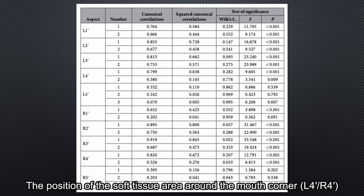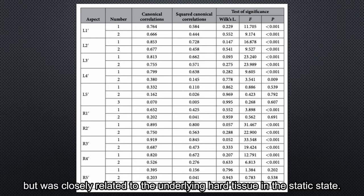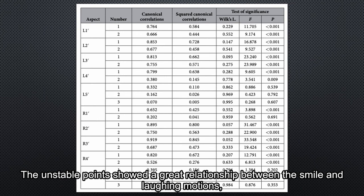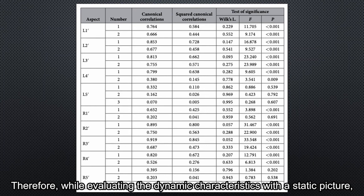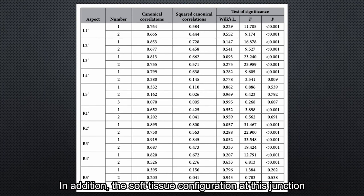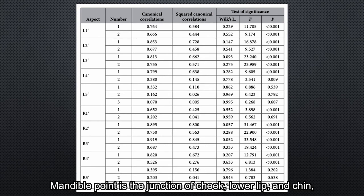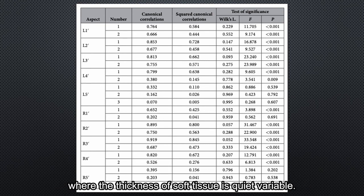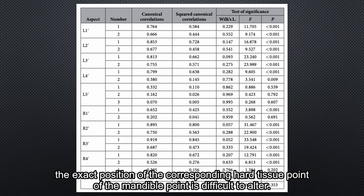The position of the soft tissue area around the mouth corner — L4, R4 — displayed the most movement between the two expressions, but was closely related to the underlying hard tissue statistically. The unstable point shows the bridging relationship between the smile and laughing motions, while the stable points show the opposite. Therefore, while evaluating the dynamic characteristics alongside the static features, it would be better to evaluate the unstable area under the smile posture. In addition, the soft tissue configuration around the mandible point is less predictable from hard tissue position changes. The mandible point is the junction of the cheek, lower lip, and chin, where the thickness of soft tissue is quite variable. Although the underlying hard tissue can be reshaped by surgery, the exact position of the corresponding hard tissue point of the mandible point is difficult to alter.